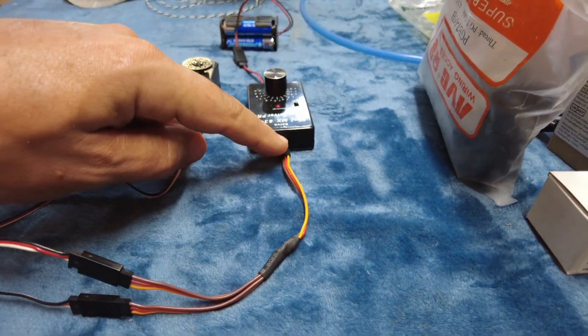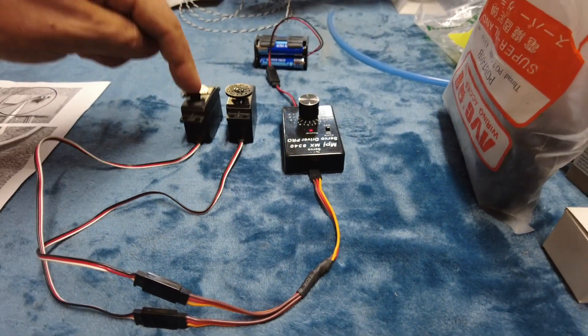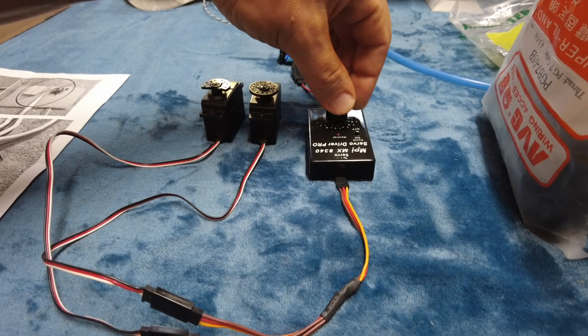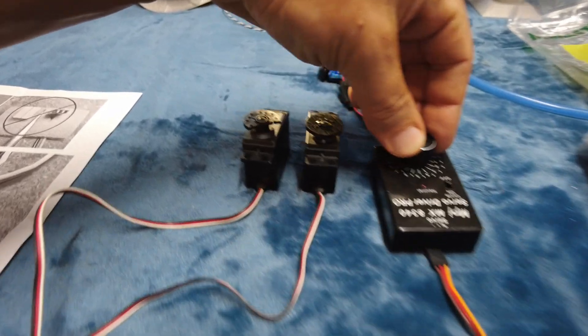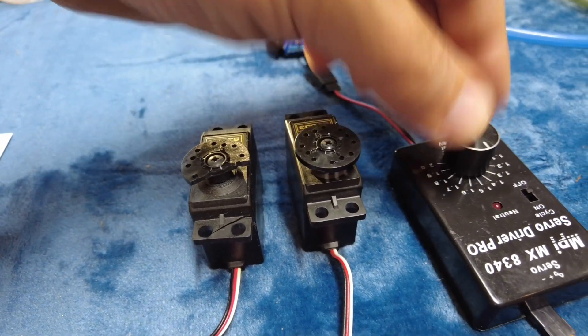That's this little sucker right here. So it takes a single input and splits it into two different directions. This is what it looks like in operation. You adjust your one output and both of the servos work in conjunction with each other.